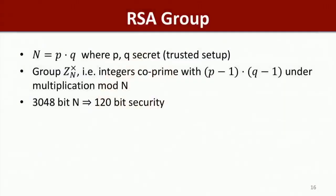There are several types of groups of unknown order. The most well-established is the RSA group: take N as the product of two secret large primes P and Q, and you get a group of integers co-prime to N under multiplication mod N. For a 3048-bit N, we get around 120-bit security. The problem is this requires someone to choose the secret primes P and Q, so it is not a trustless setup — you'd have universal setup but not fully transparent setup. RSA groups are based on the most standard assumptions.